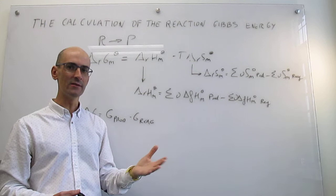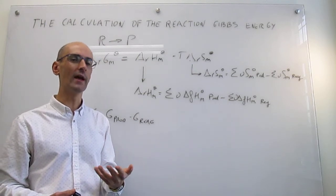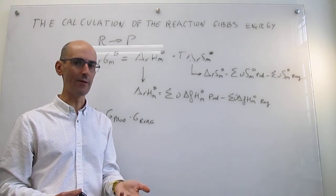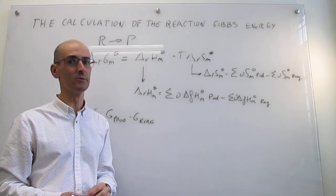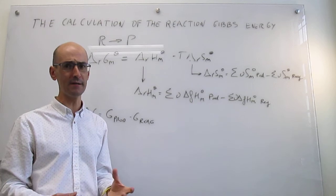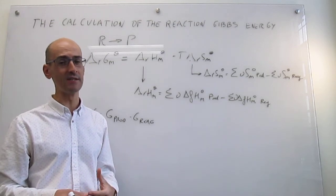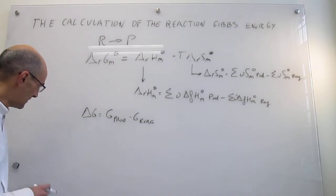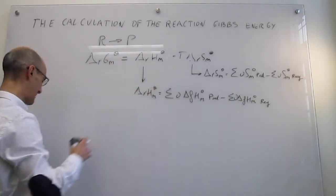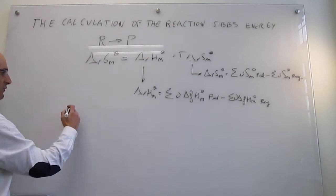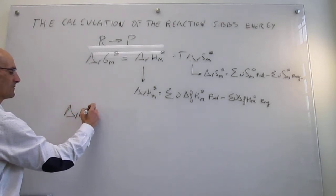So the question is: which route do we use for the Gibbs energy — Gibbs energy of formation, or absolute molar Gibbs energies? Because Gibbs energy is an energy, it is obvious we must go through the Gibbs energy of formation route. Knowing the absolute Gibbs energy of a substance is impossible because you would need to account for all particle interactions, which is generally very hard to do.